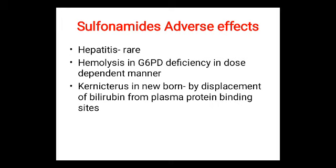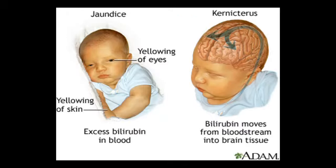Hepatitis is a rare adverse effect. Hemolysis can occur in G6PD-deficient patients in a dose-dependent manner. Kernicterus in newborns occurs due to displacement of bilirubin from plasma protein binding sites by sulfonamides. A picture illustrates kernicterus in a newborn.